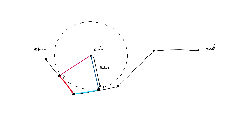Finding the intersections of the tangent normals will give the center of the circle. The distance between the center and either of the endpoints gives the radius.